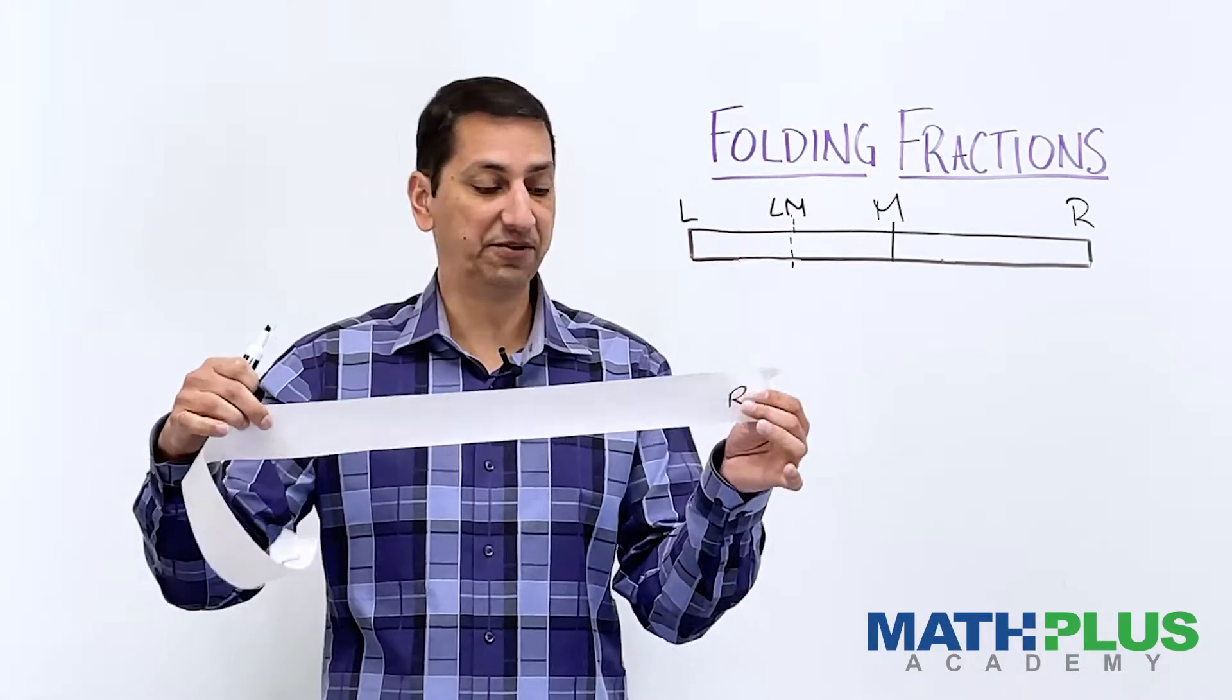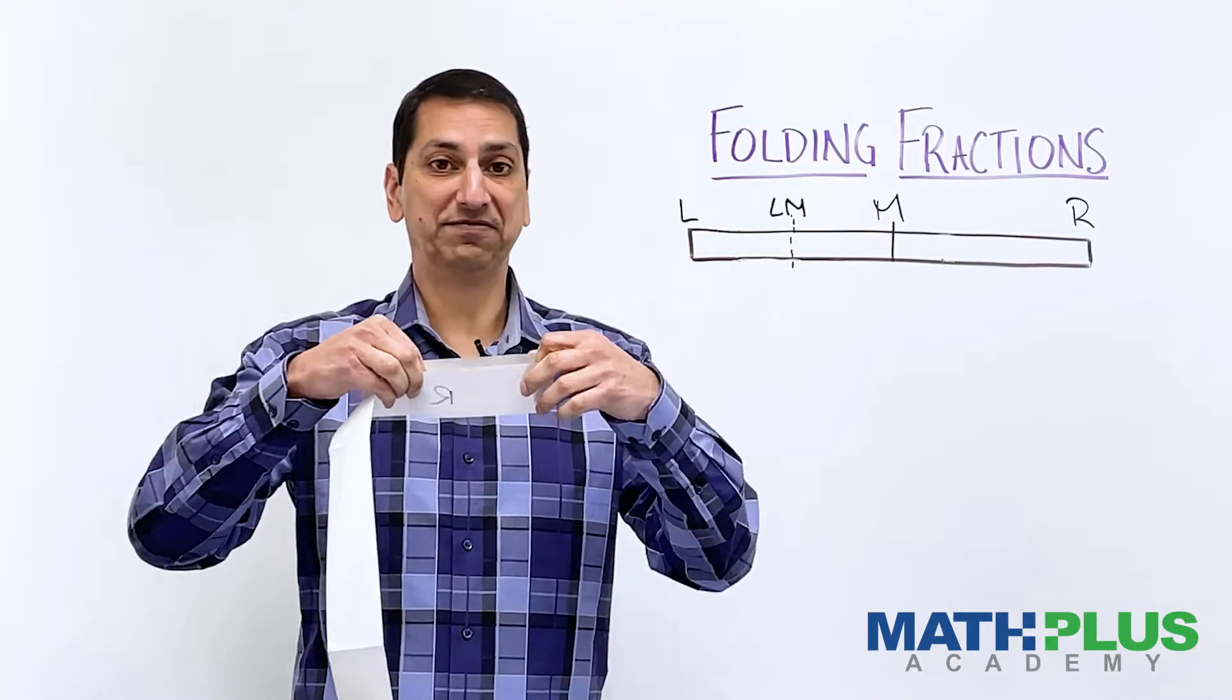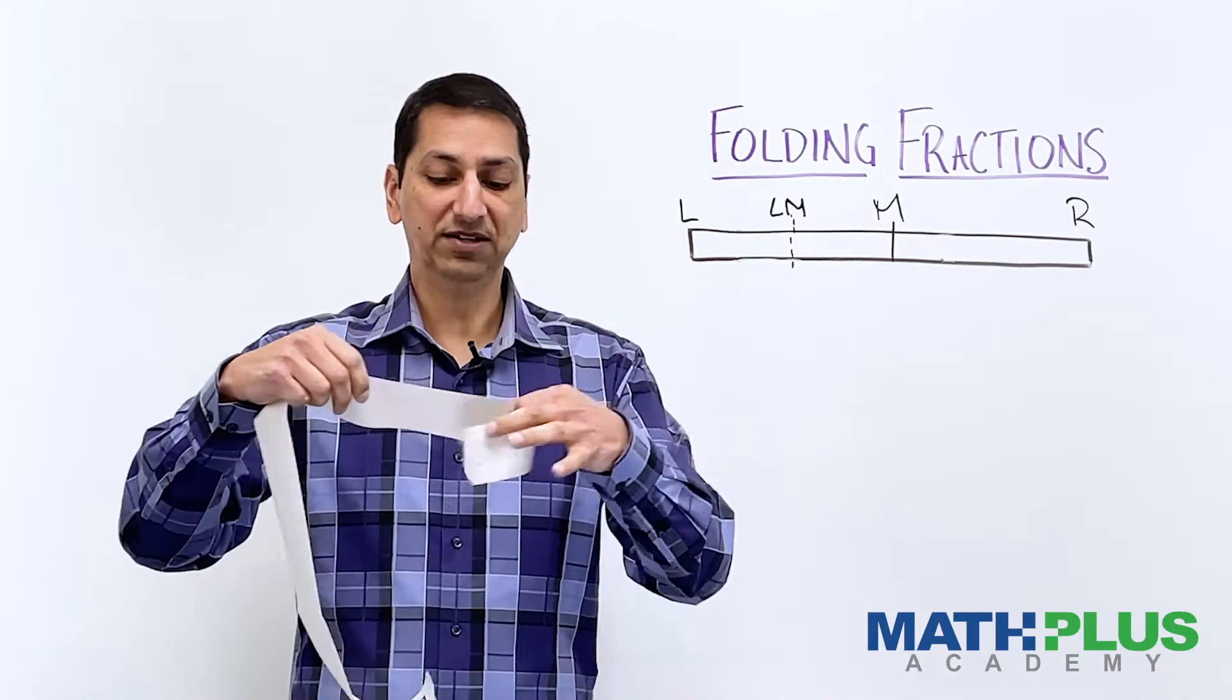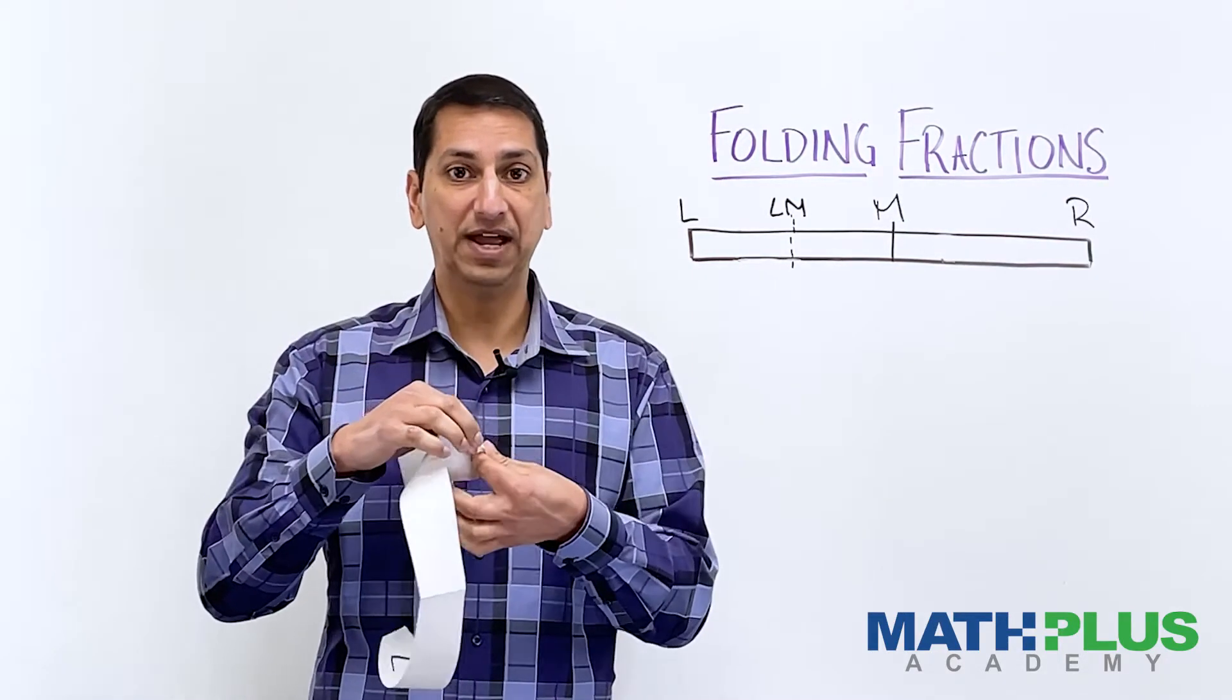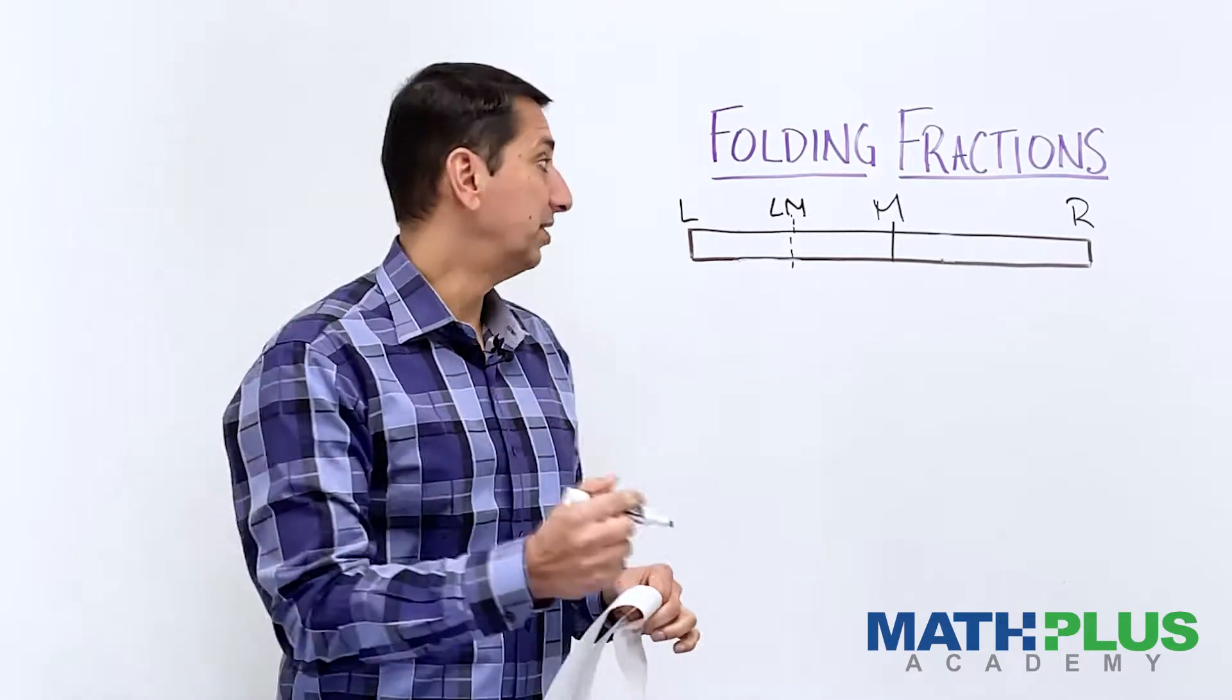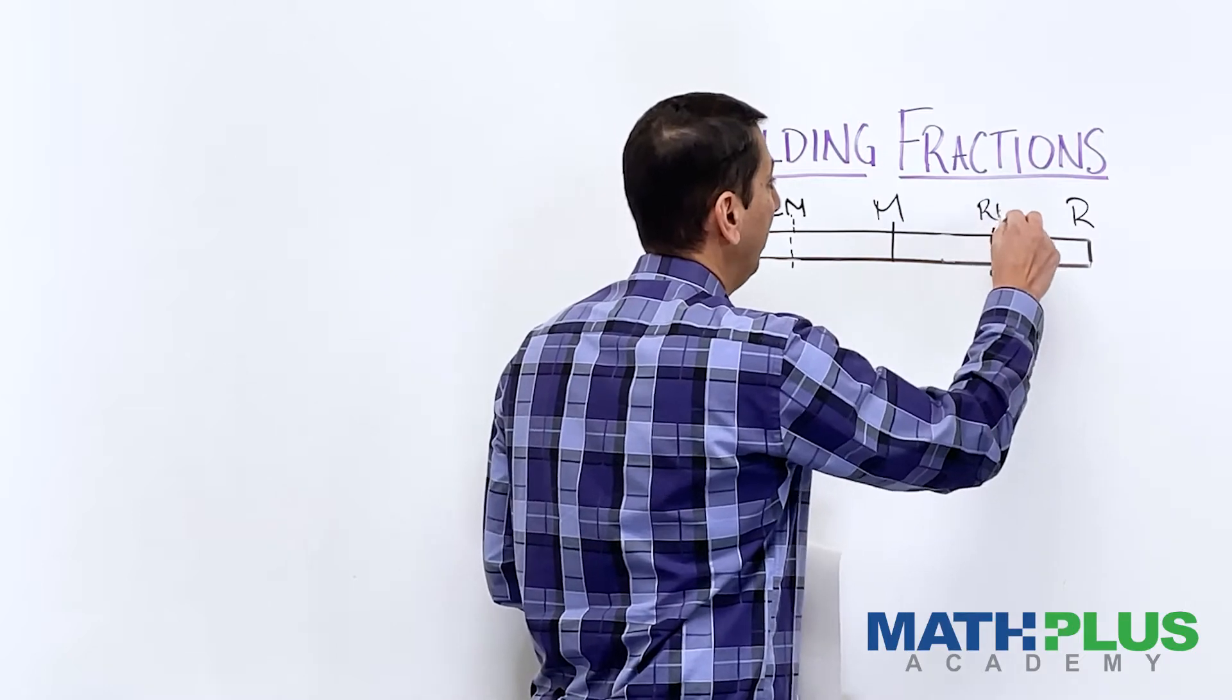If on the other hand, I had folded the right over to the middle, that would have made a crease on the other end of my paper over here. And I would call that RM because I folded the right over to the middle. So let me mark that on the chart. So that would be here, we would call this RM.